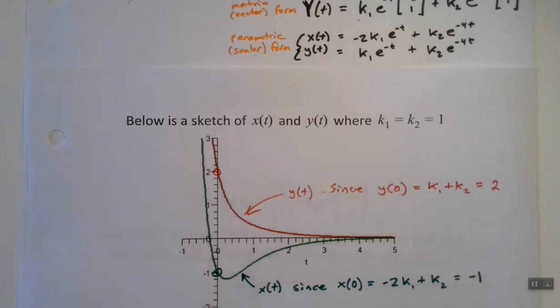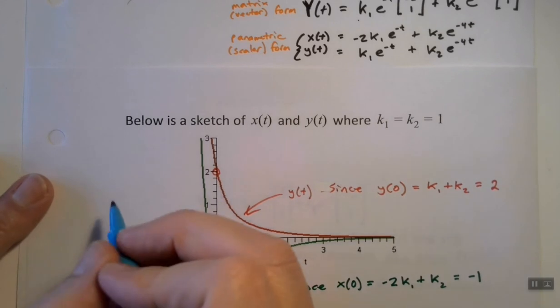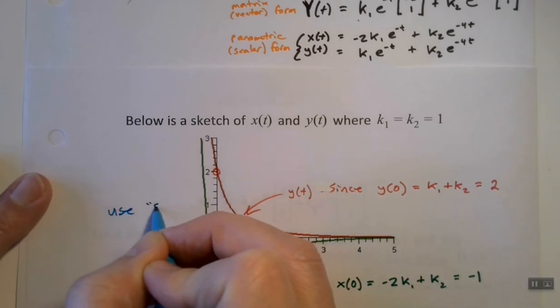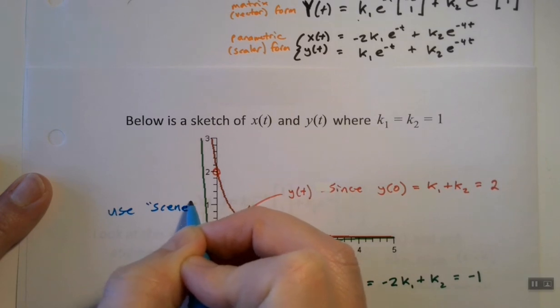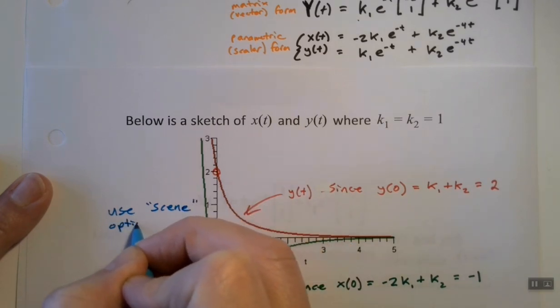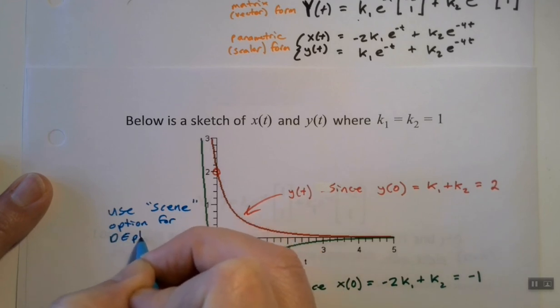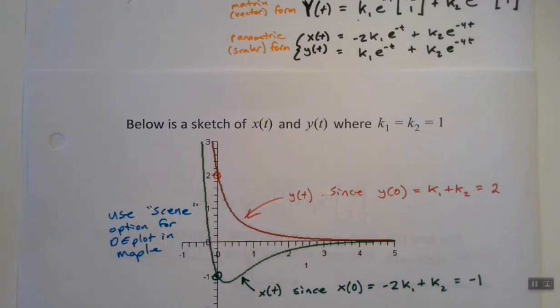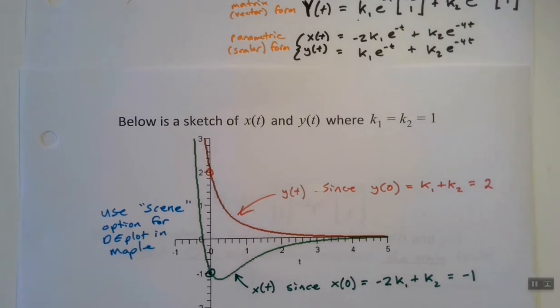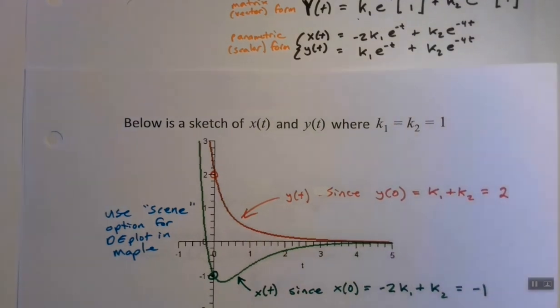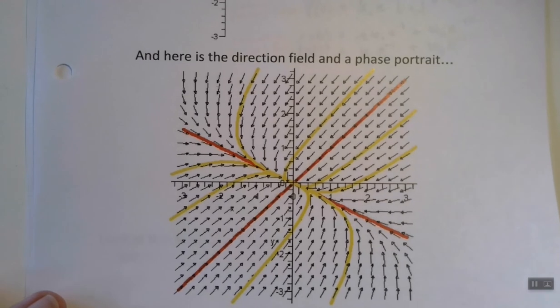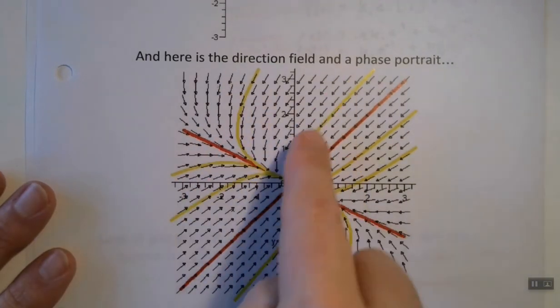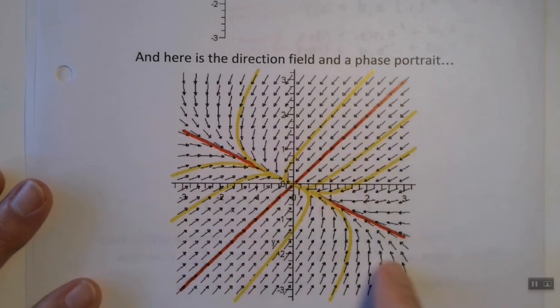So we can tell what our scene graph would look like on Maple, and you could produce these by using the scene option for the DEplot in Maple. So you can produce that graph or both of those graphs separately to be able to see what's going on. And if you create a full-on phase portrait, you'll be able to see something that looks like this, the direction field and the phase portrait, all the different particular solutions, along with my two straight-line solutions.